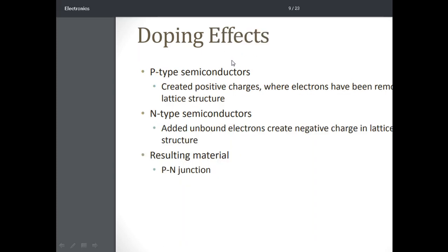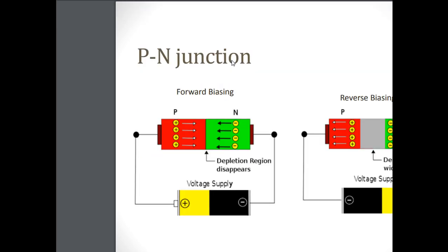Doping is the process of adding impurities. In P-type, positive charges are created when electrons are removed from the lattice structure. In N-type, added bound electrons create negative charge in the lattice structure. If you join N-type and P-type, you get a PN junction. A PN junction is a combination of P-type and N-type placed together, which forms a depletion region.